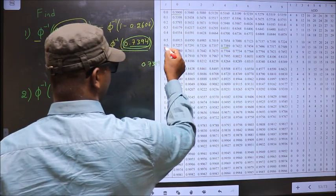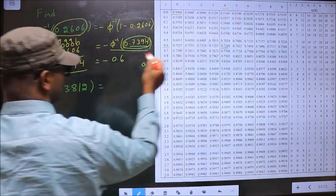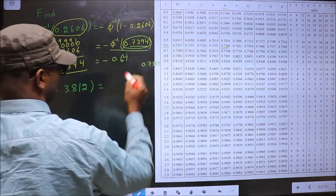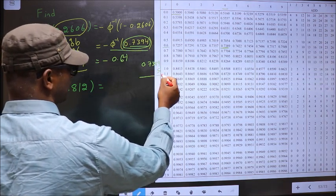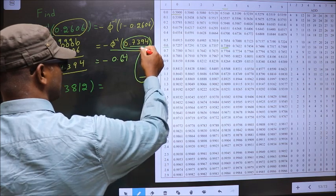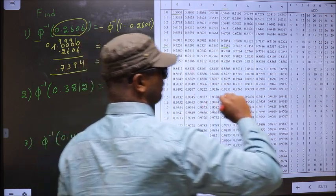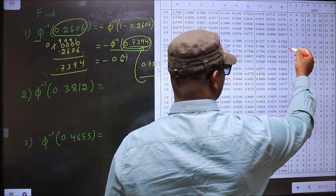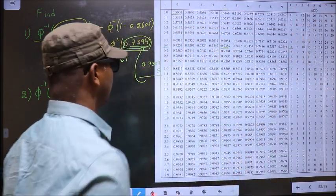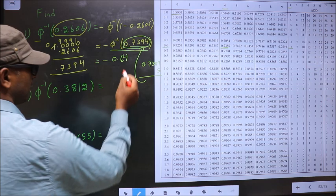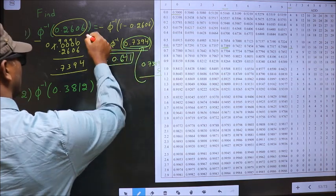0.7389 is present at 0.64. Now to this I should add more. In the same row I look for the additional value. Since the exact value isn't there, take the smaller number 3, which is present at column 1. So 1 becomes your third decimal. This is the answer for this one.